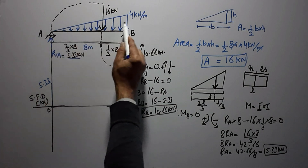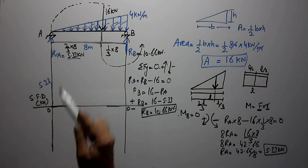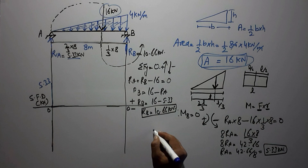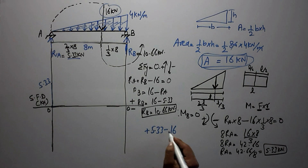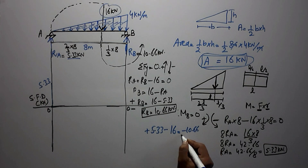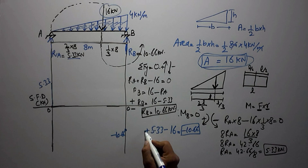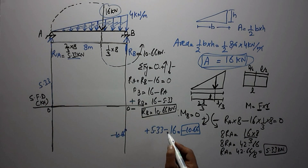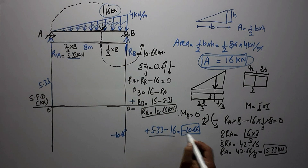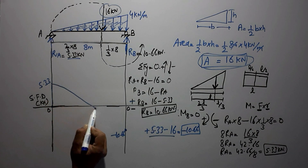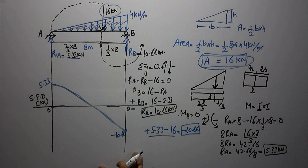Moving along the beam, there is a triangular load acting downward with a total magnitude of 16 kN. Subtracting this downward load from the initial +5.33 kN gives 5.33 − 16 = −10.66 kN. So the shear force value reaches −10.66 kN at support B. We plot −10.66 below the reference line and connect the two points with a curve.